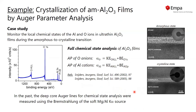In the past, chemical state analysis could be performed using non-monochromatic X-ray radiation because the Bremsstrahlung would allow the excitation of deep core levels, which is not possible when using monochromatized soft X-ray radiation.